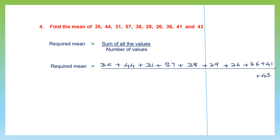Let's count how many numbers there are: 1, 2, 3, 4, 5, 6, 7, 8, 9, and 10 numbers. So we have to first find the sum of all these values, then divide it by 10.